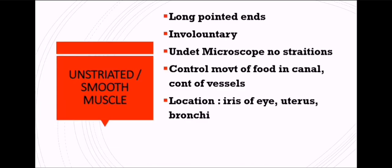Now we will head towards unstriated or smooth muscles. Why are they called smooth muscles or unstriated? Because when we look at them under the microscope, there are no striations — no light and dark striations as we see in skeletal muscles. They are called smooth muscles because they are involuntary, meaning they are not under our control.